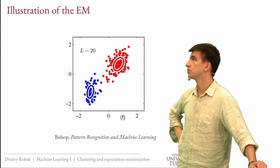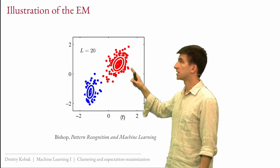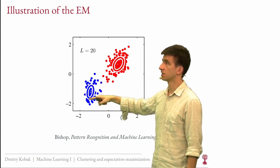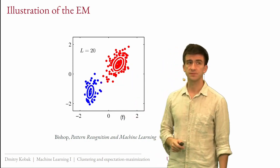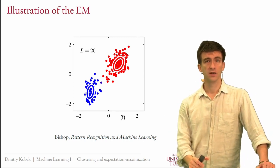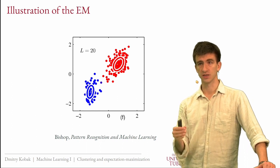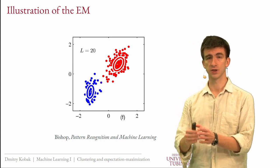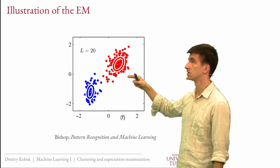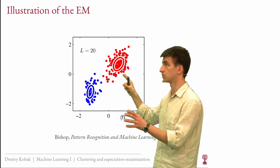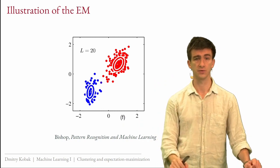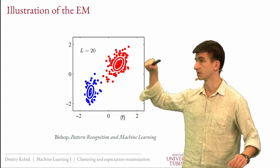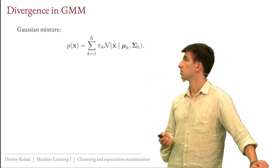The final Gaussians have different covariances — one is more vertically oriented, one more horizontally oriented. GMM typically converges in a different sense than Lloyd's algorithm: rather than stopping entirely, the updates become very small, like gradient descent approaching a minimum. GMM usually needs more iterations than k-means but captures the shape of each cluster through its covariance matrix.